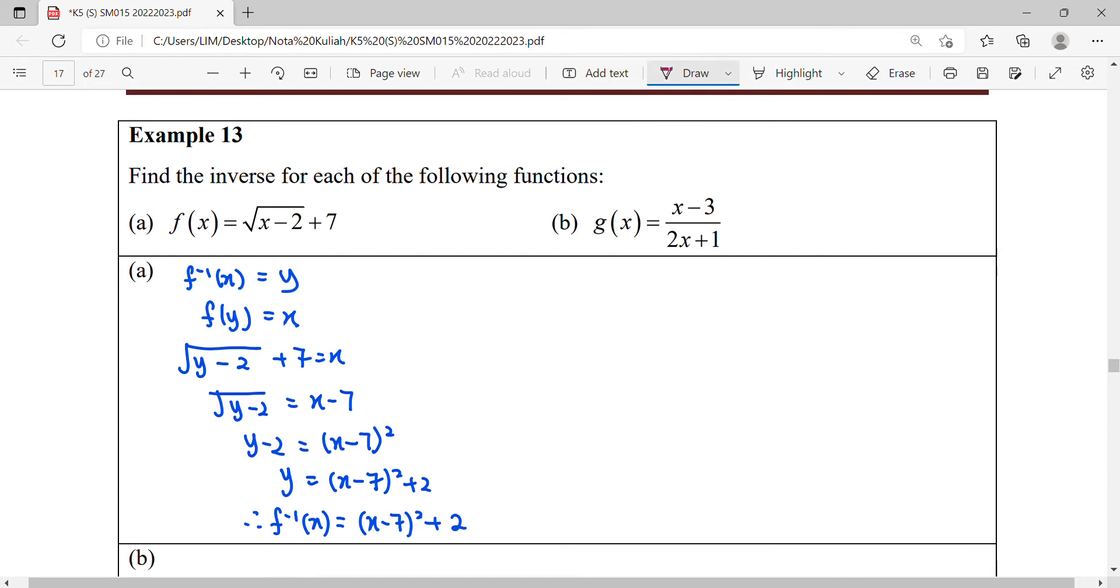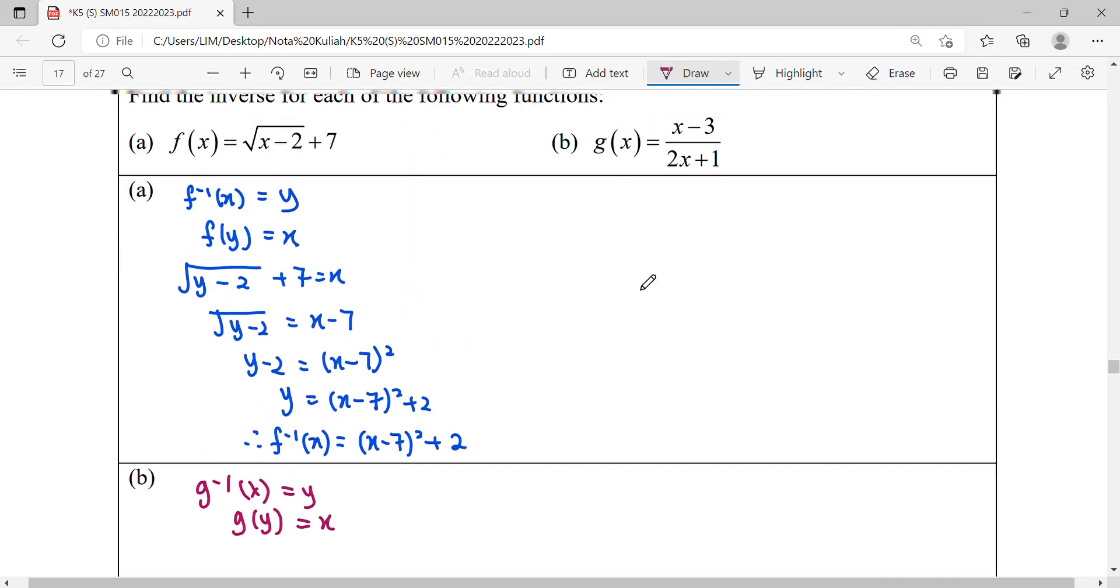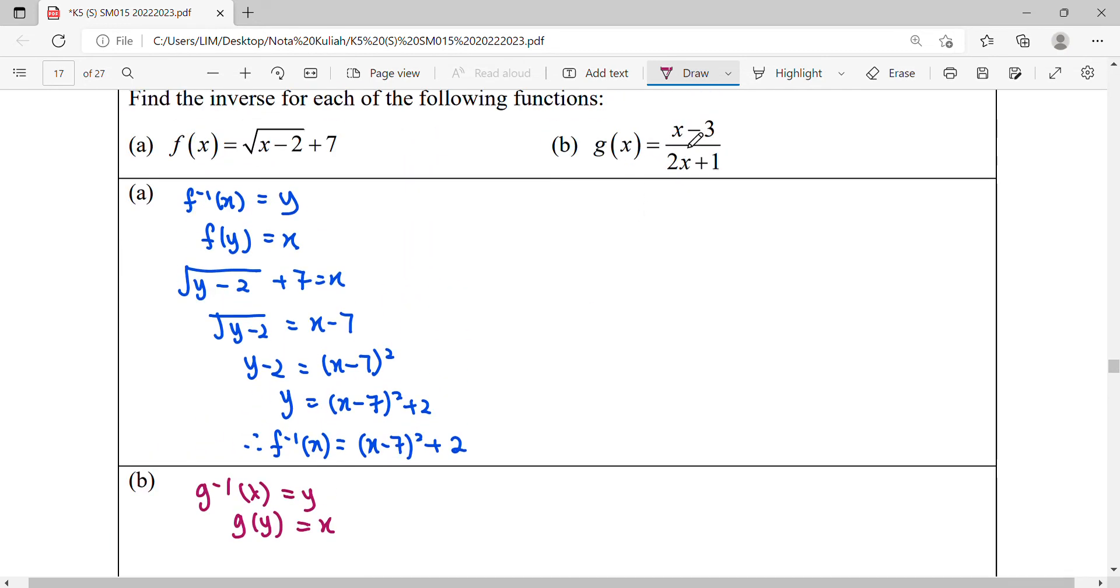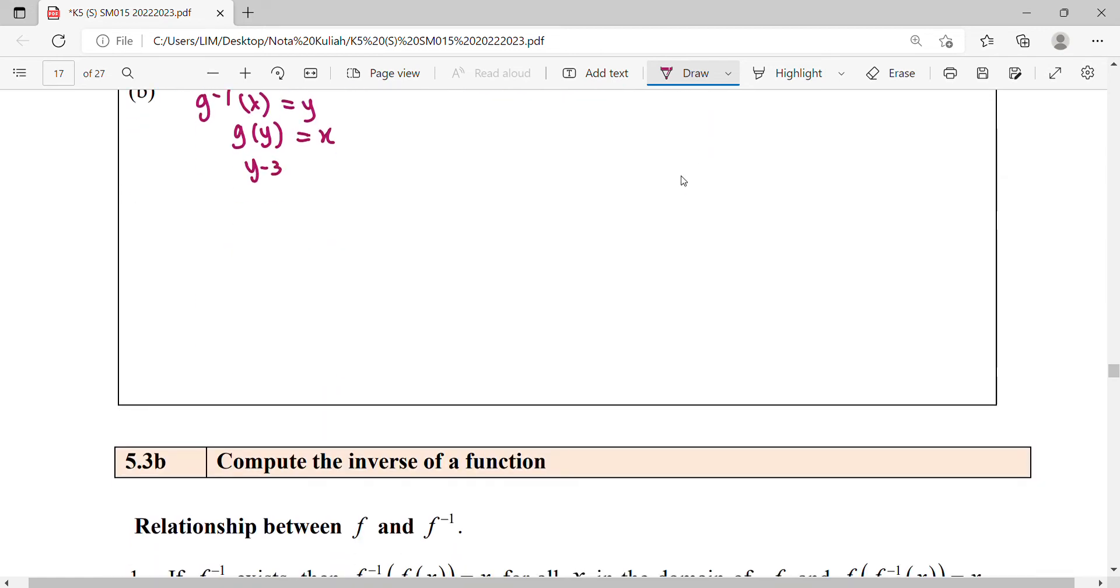For the second question b, g inverse equals y. Inverse the function so g(y) will be inversed to get back to x. So substitute y into the function g under the x here. This gives you y minus 3 over 2y plus 1.